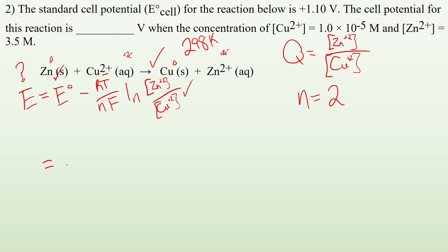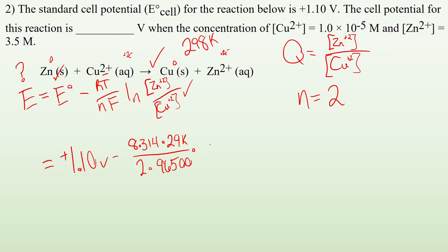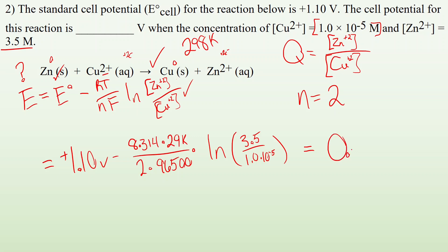Let's do some plugging and chugging. E⁰ is positive 1.10 volts, minus R (8.314) times 298 Kelvin, all over 2 times 96,500 for my Faraday constant, times the natural log of Zn²⁺ (3.5 molar) divided by Cu²⁺ (1×10⁻⁵). When I plug and chug in my calculator, I end up with a final answer of 0.94 volts.